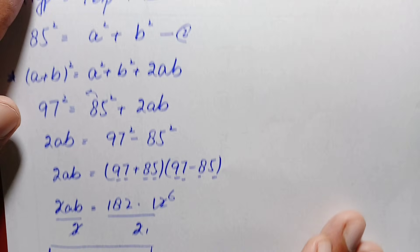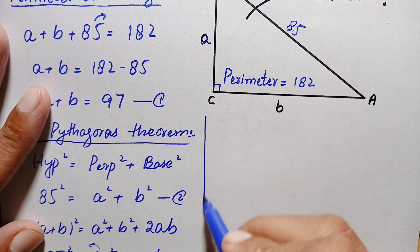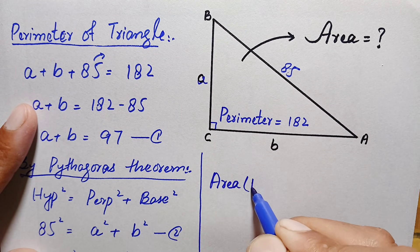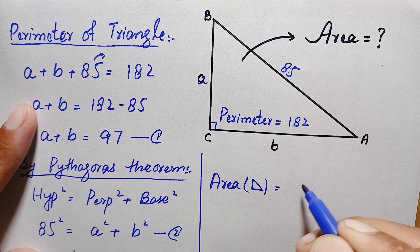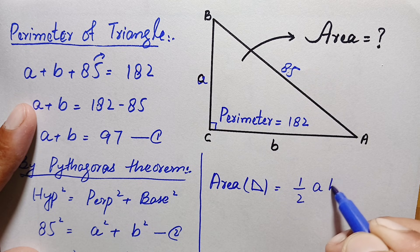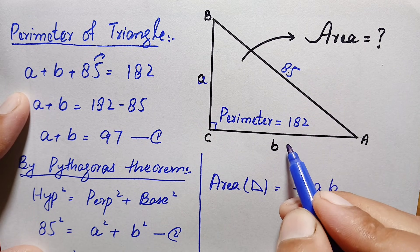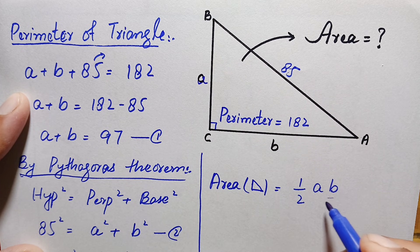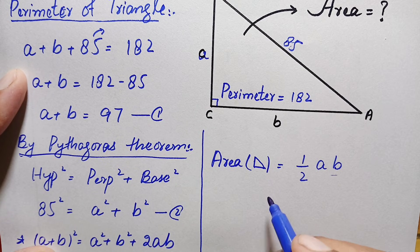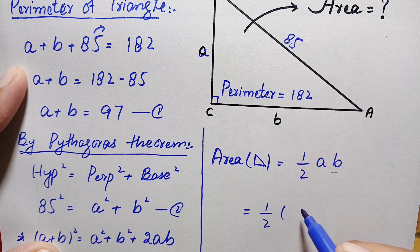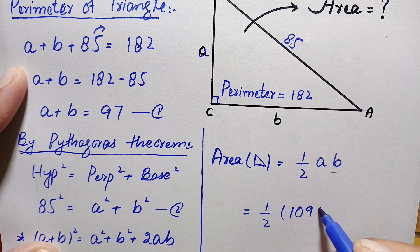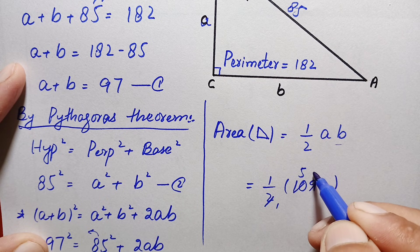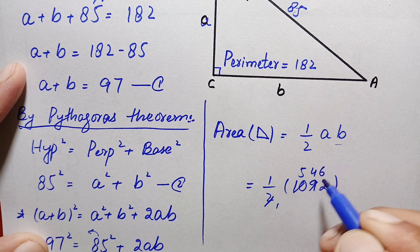Now we use this value of ab to find the area of the right angle triangle. The area of any right angle triangle is half times base times height, where one side is the base and the other is the perpendicular height. So area = ½ × ab = ½ × 1092 = 546.